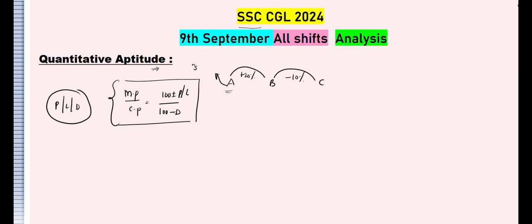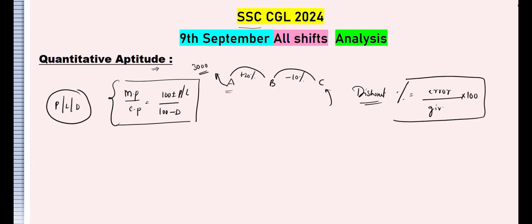For example, if the cost price of A is 3000, they ask what is the cost price for C. You can do this kind of problem. One more type is the dishonest shopkeeper. The profit percentage formula is: error value divided by given value, multiplied by 100. Remember this formula.